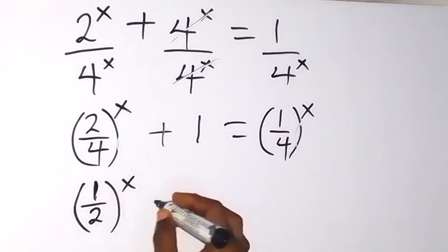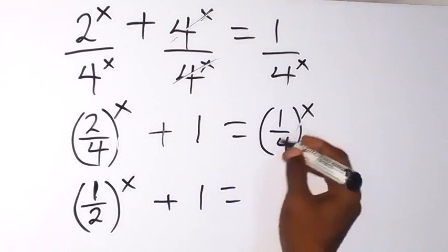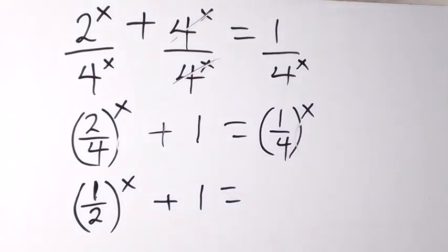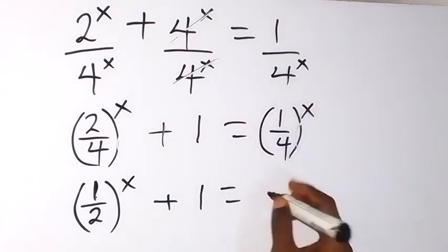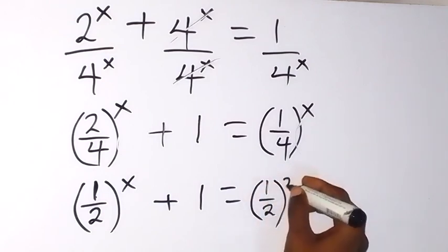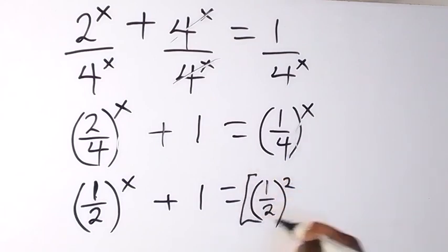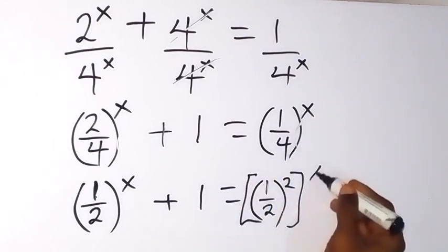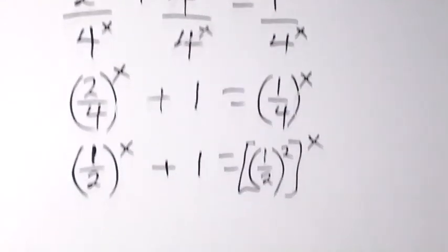Then raised to power x plus 1 equals — here we can also express 4 to base 2 and write 2 raised to power 2. In the same way, we can write 1 as 1 raised to power 2. So that means we have 1 over 2 raised to power 2, which gives us 1 over 4 back, then all raised to power x.